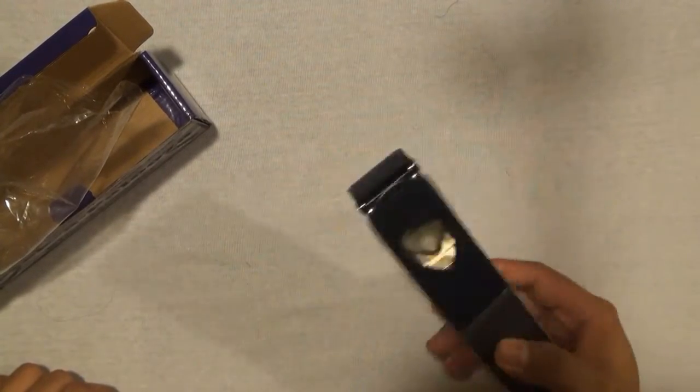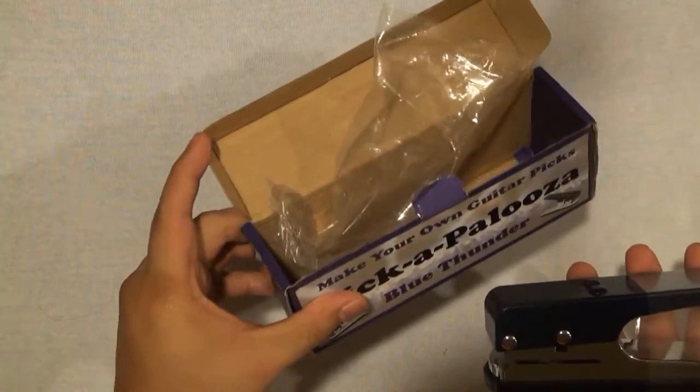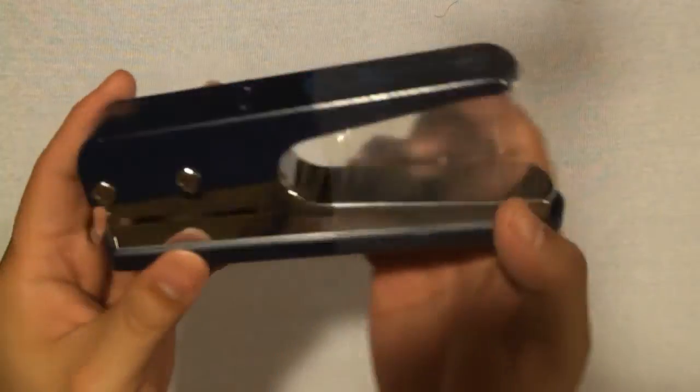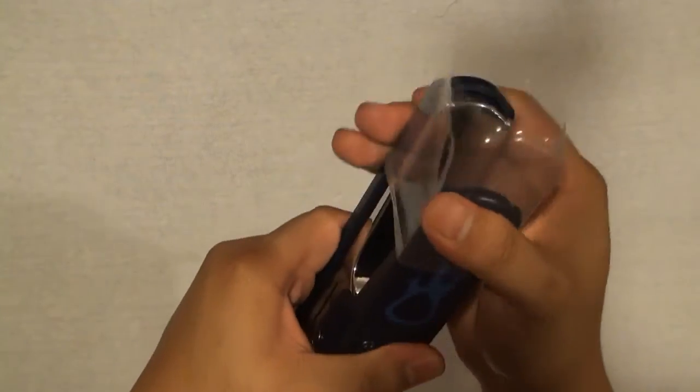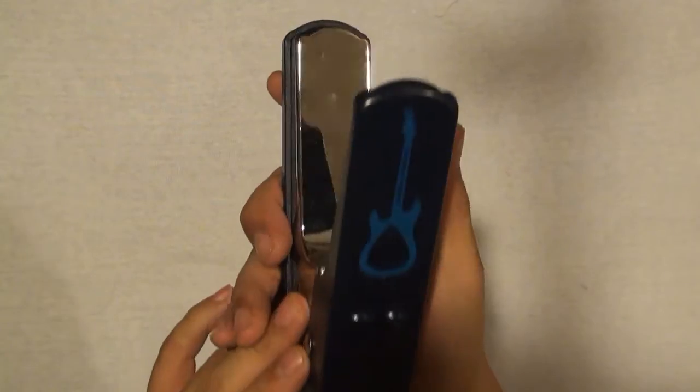So it does look like a stapler or a puncher. So this is what I got out of the box. Nothing else. This is how it looks like. It has this thing holding it. So let's remove that. So that's how it looks like. It has a very cool guitar logo right there. It's a Pickapalooza logo I guess.